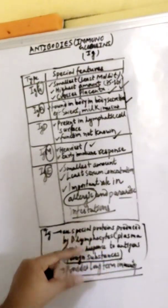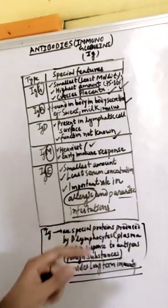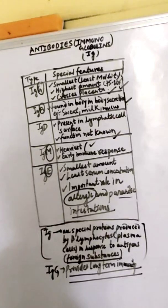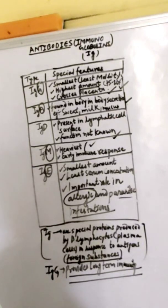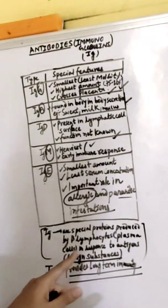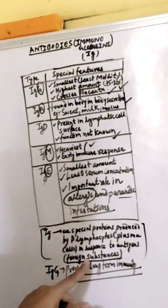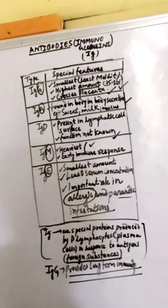Before that, we will learn what antibodies are. Antibodies are special proteins which are produced by plasma cells or B-lymphocytes in response to antigens, which are foreign substances such as bacteria, fungi, and viruses.